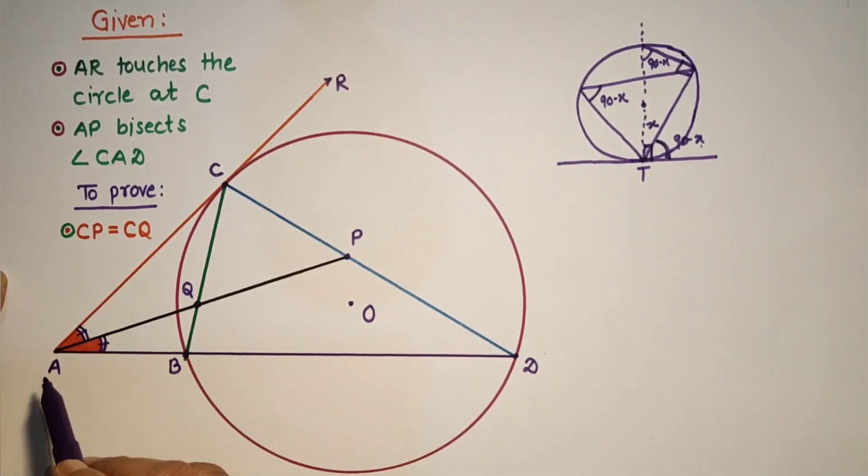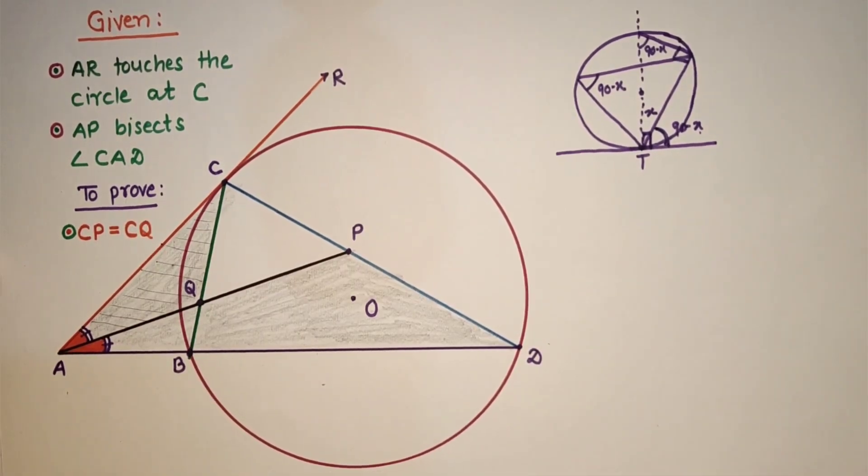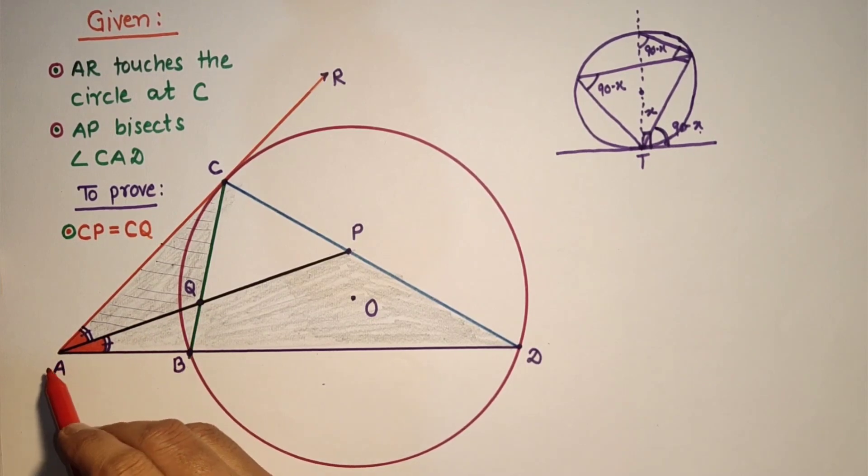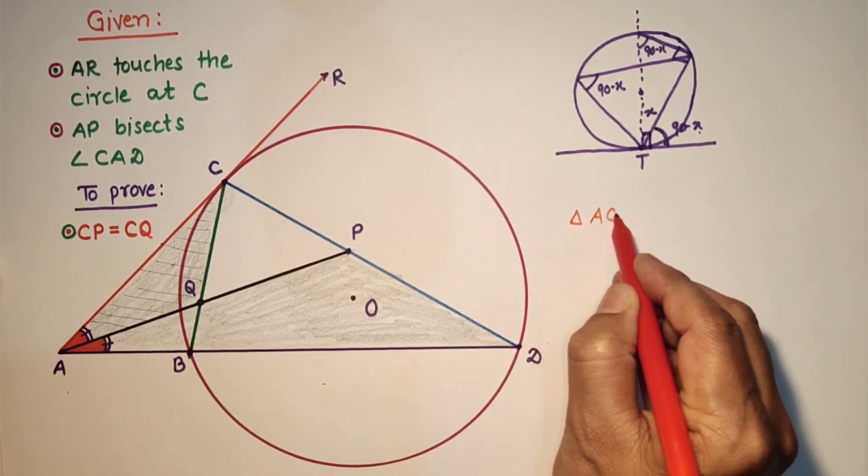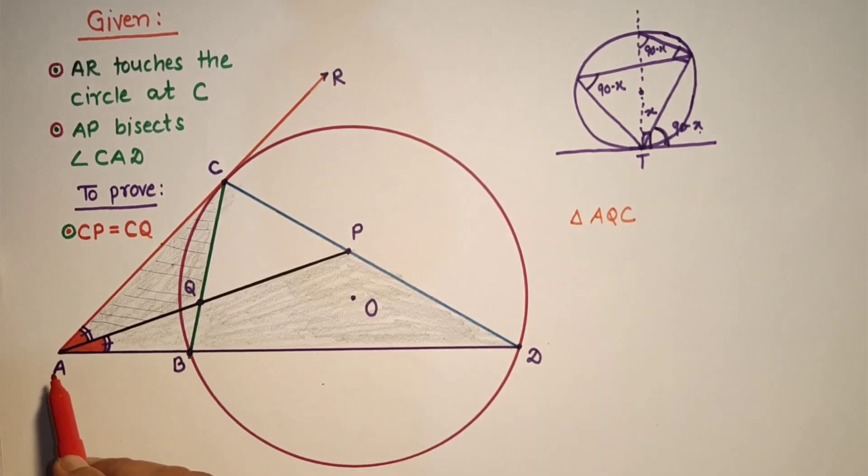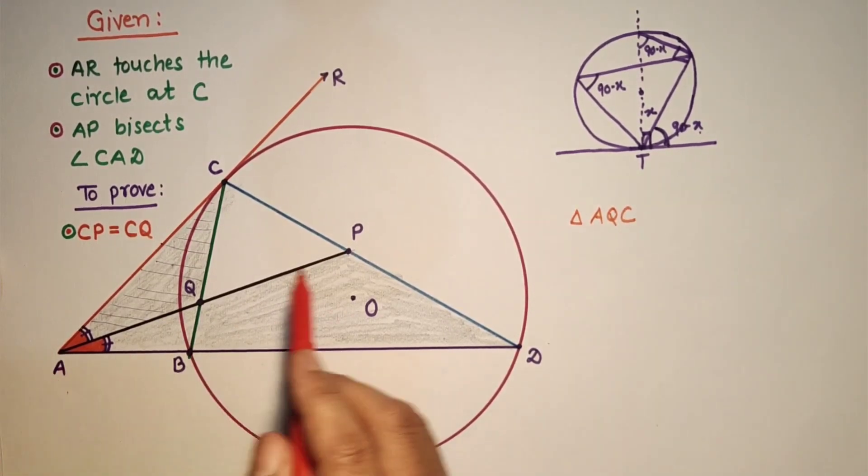In two triangles, triangle AQC and APD. So considering triangle AQC, triangle AQC and triangle APD.